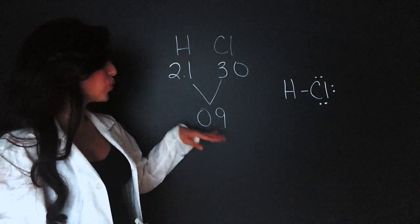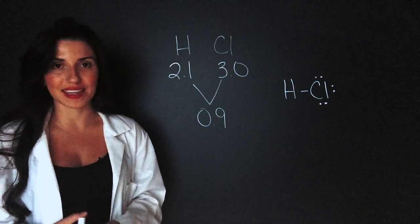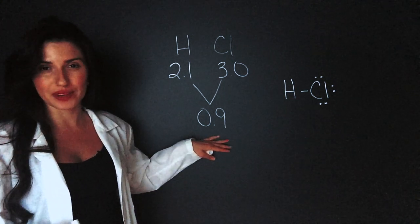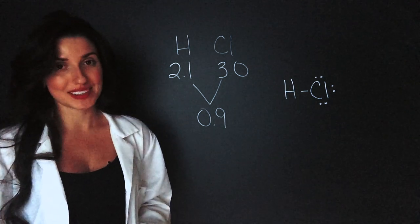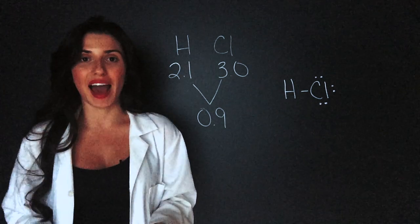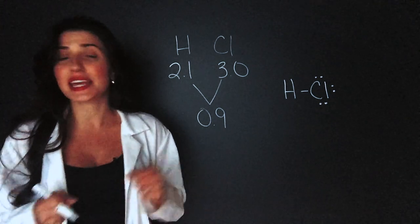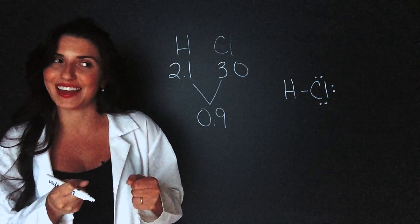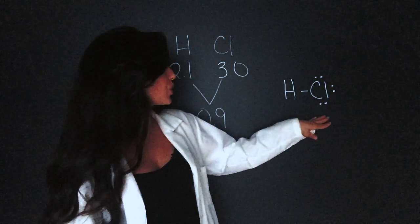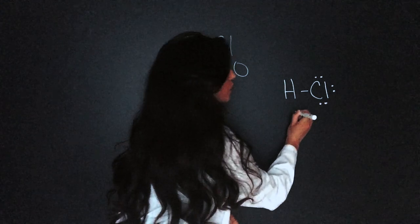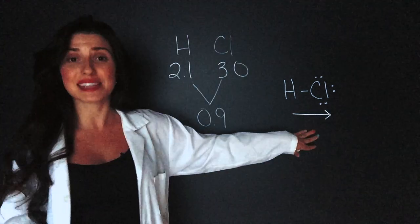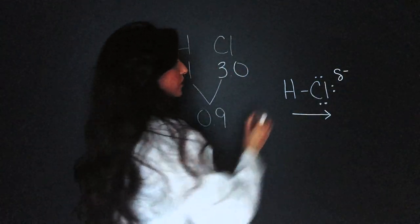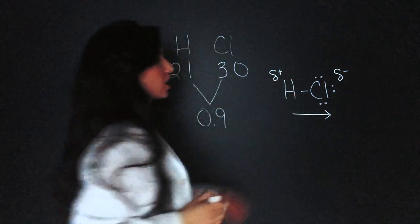Something interesting is happening here. When a covalent bond has a difference in electronegativity that is still less than 1.9 but more than 0.5, it's still covalent but it's a polar bond. All this means is that one of the atoms has such a higher electronegativity that although it's not taking the electron completely, it is pulling the electron a little bit more than sharing it equally. In this case, chlorine has the higher electronegativity, so it will be pulling the electrons closer to it. This is a vector, so we draw the arrow, and we say that there is a partial negative charge on the chlorine and a partial positive charge on the hydrogen.